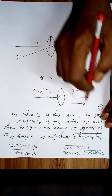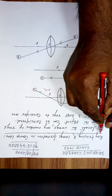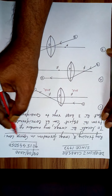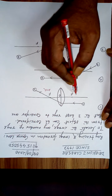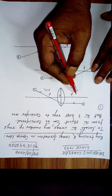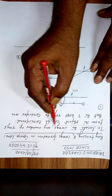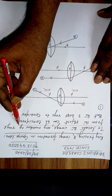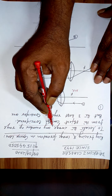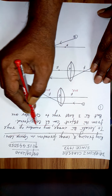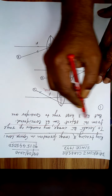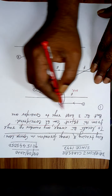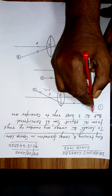Now let us study ray tracing and image formation in a convex lens. To locate the image, any number of rays from the object can be considered, but three best rays are typically used.